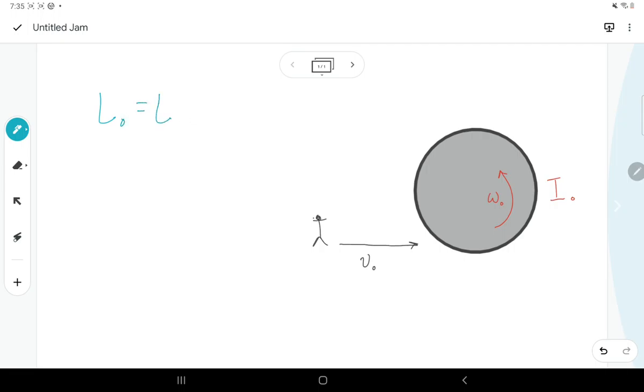So we can say our mr squared over 2 times our omega. But now what about the person? What you have to remember about linear velocity relative to angular velocity is that your angular velocity is equal to your momentum cross product r.